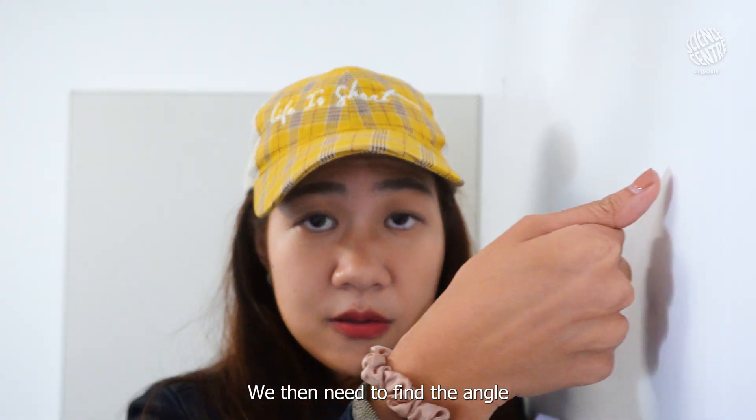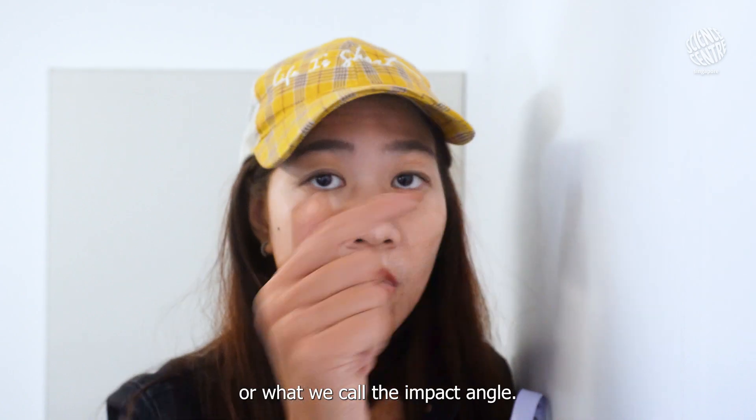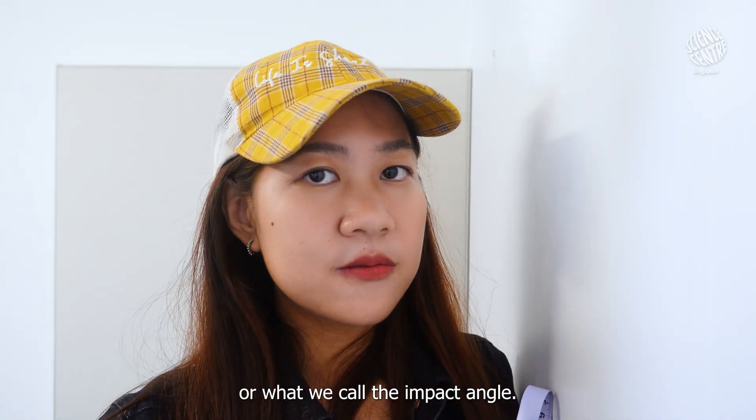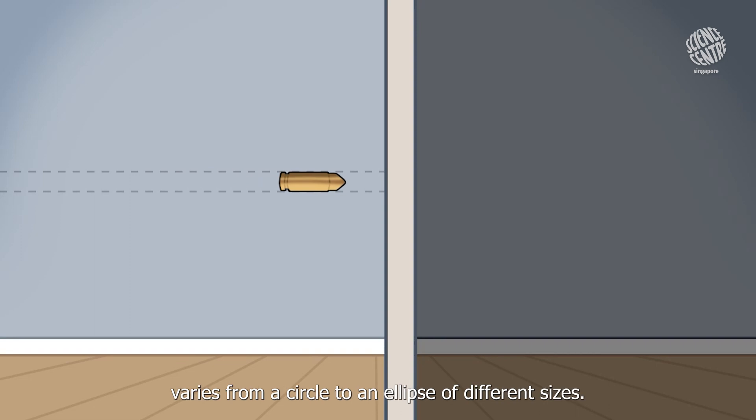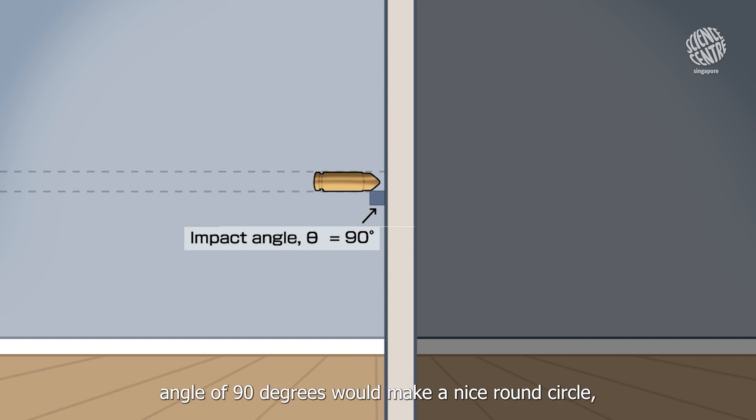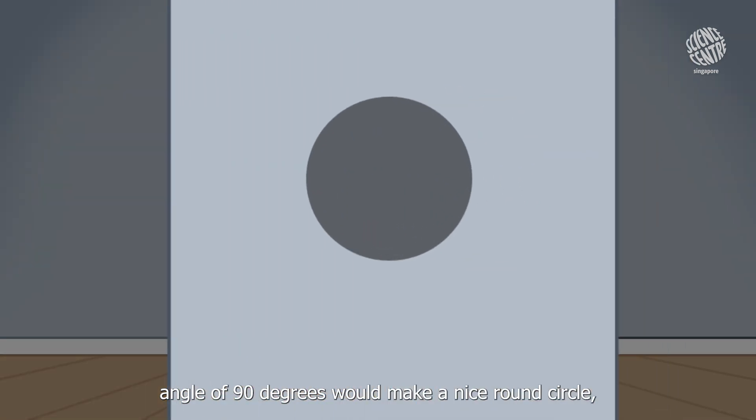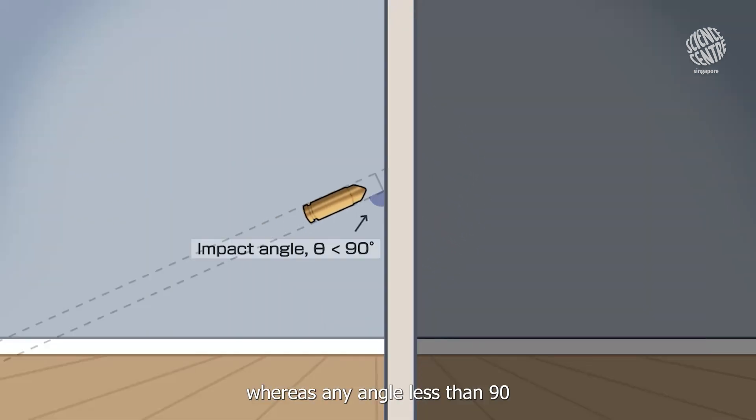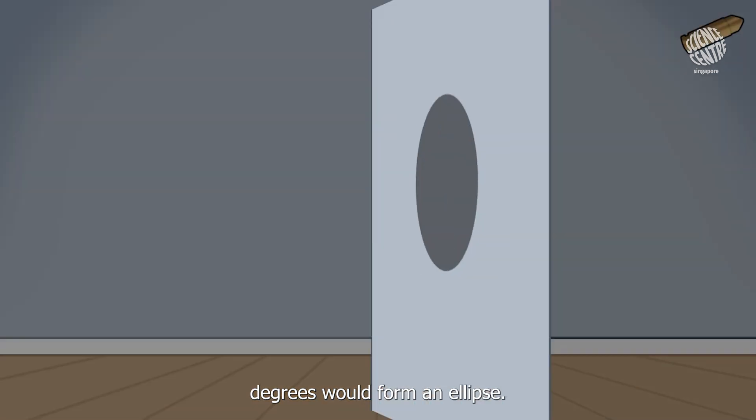We then need to find the angle at which the bullet hit the wall, or what we call the impact angle. Depending on the impact angle, the shape of the bullet hole varies from a circle to an ellipse of different sizes. A bullet at an impact angle of 90 degrees would make a nice round circle, whereas any angle less than 90 degrees would form an ellipse.